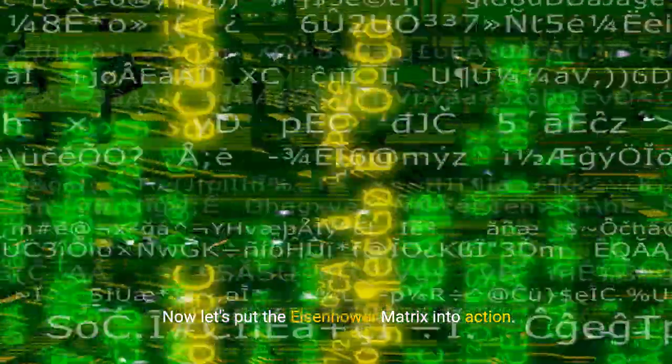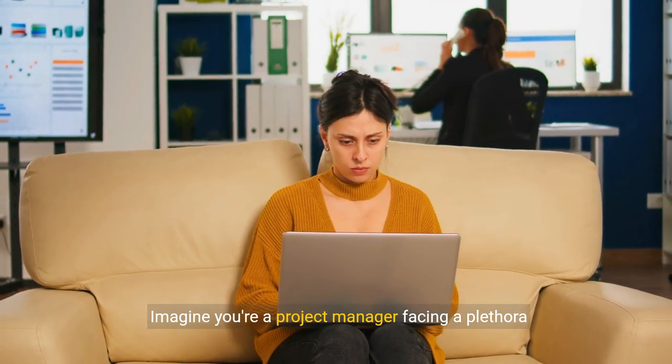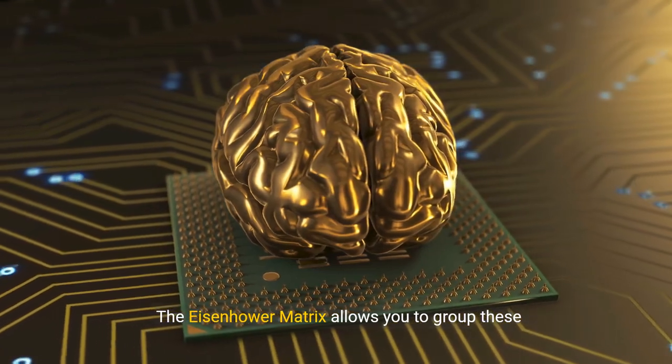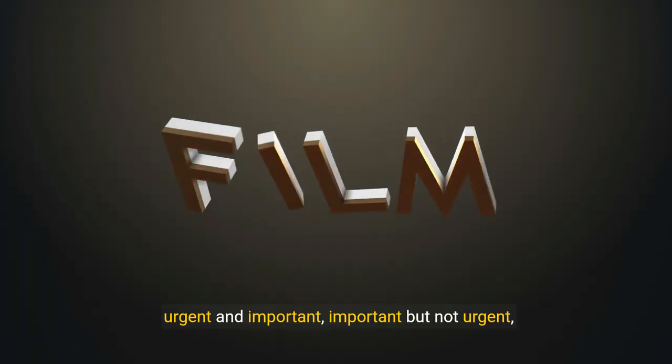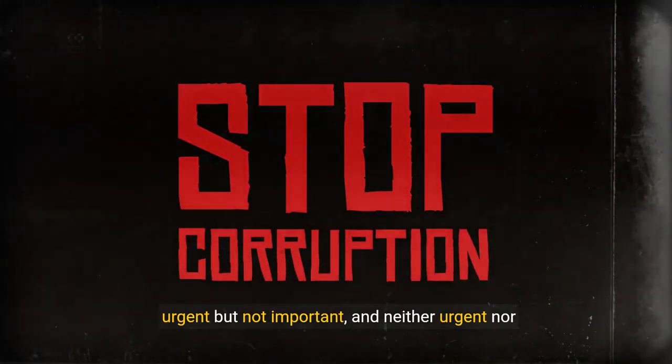Now let's put the Eisenhower matrix into action. Imagine you're a project manager facing a plethora of daily tasks. The Eisenhower matrix allows you to group these into four categories: urgent and important, important but not urgent, urgent but not important, and neither urgent nor important.